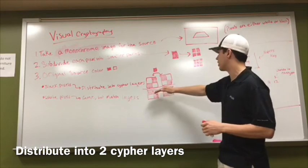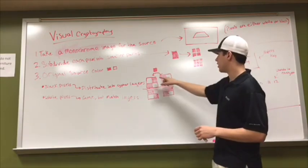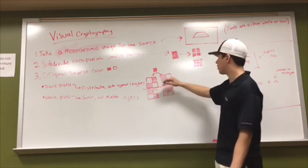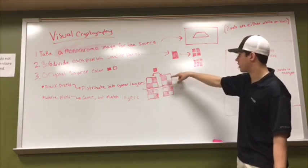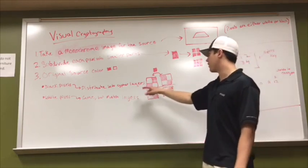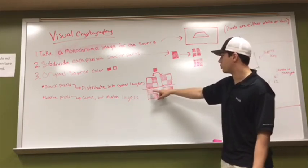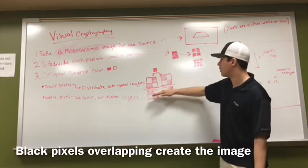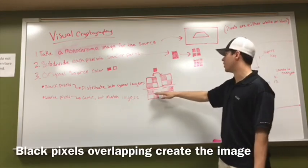For the black pixels, the layers would be alternating white and black, black and white for the first layer, and vice versa for the other layer. The second layer will be on the opposite sides. So if these images were to overlap, the black spaces would be one black pixel, which would be your image.